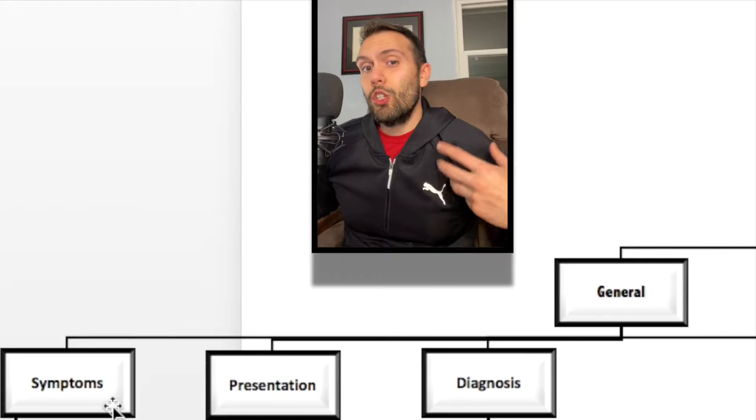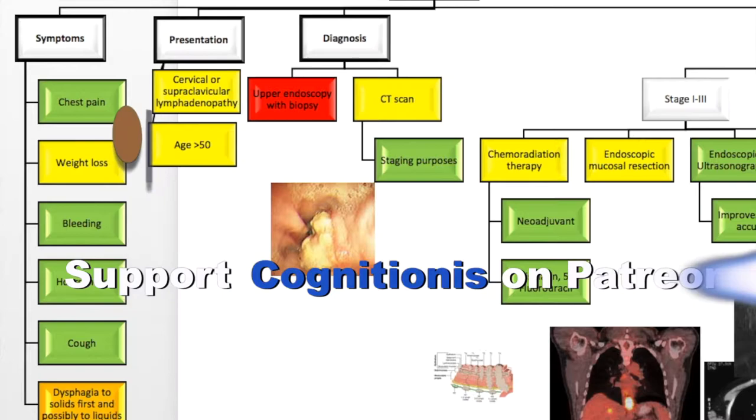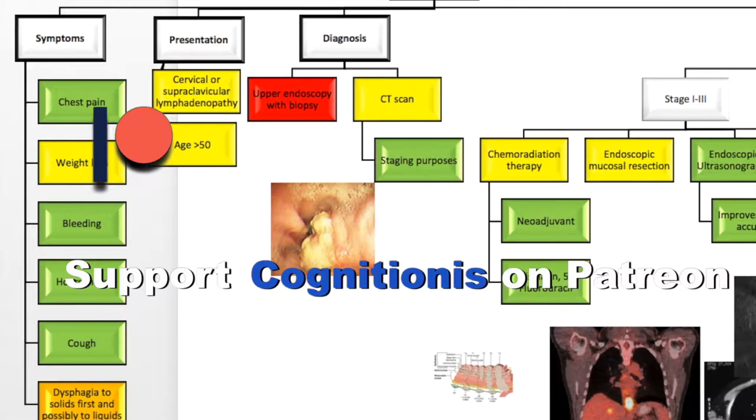The number one symptom overall is dysphagia — the most common symptom these patients will have. It's typically an obstructive dysphagia because there's a tumor or mass in the esophagus. Usually there'll be dysphagia to solids first, then progressive dysphagia to liquids as the tumor narrows the esophageal lumen. Remember, with achalasia you might have dysphagia to solids and liquids all at once, whereas with this it's a progressive dysphagia to solids first.